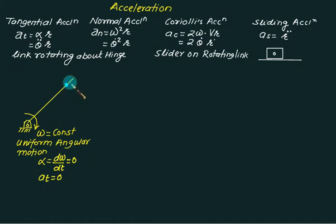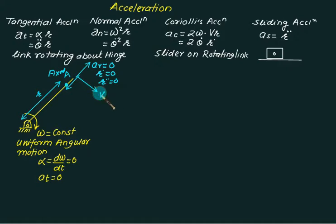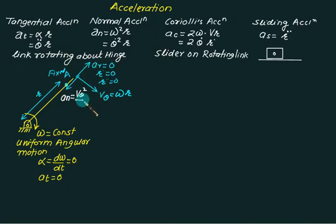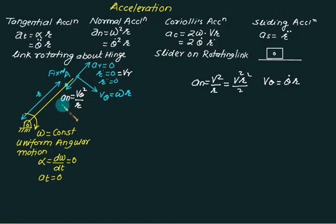Consider any point at distance r from O. Since r is fixed, the point only experiences normal acceleration. The radial acceleration a_r is zero. The tangential velocity is v-theta equal to omega times r, or theta-dot times r. The centripetal acceleration An equals theta-dot squared times r, or v-theta squared by r. So for constant omega, total acceleration equals An for the rigid link at point A.